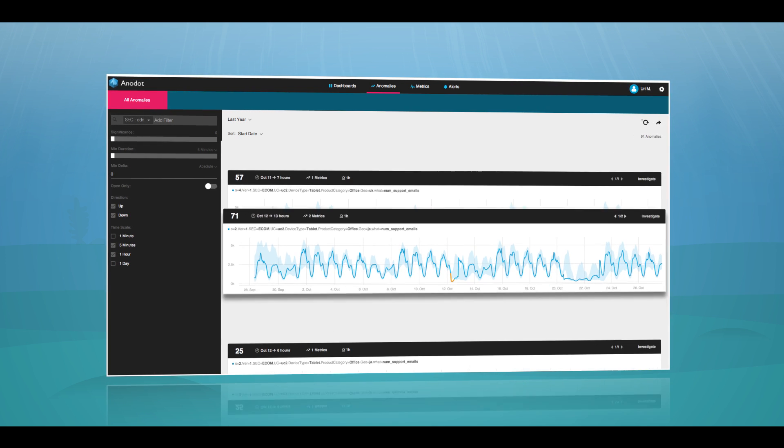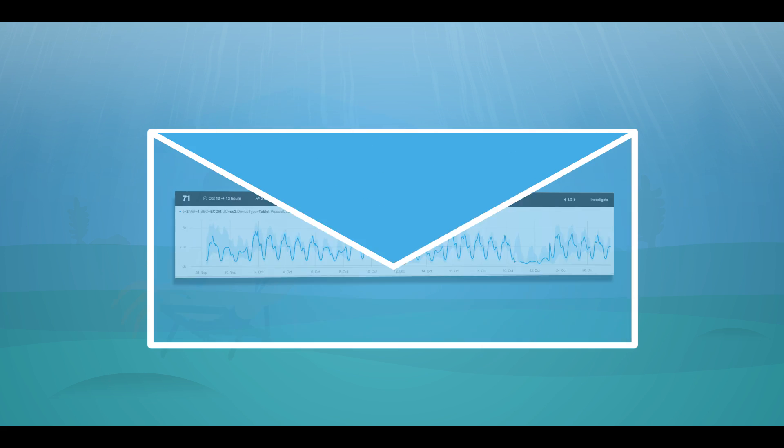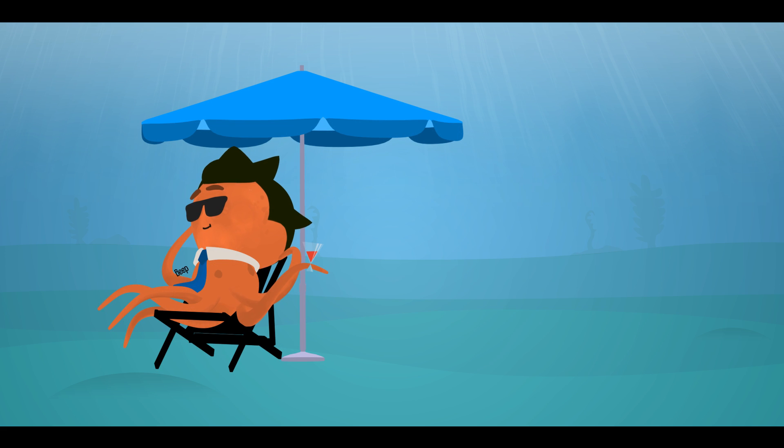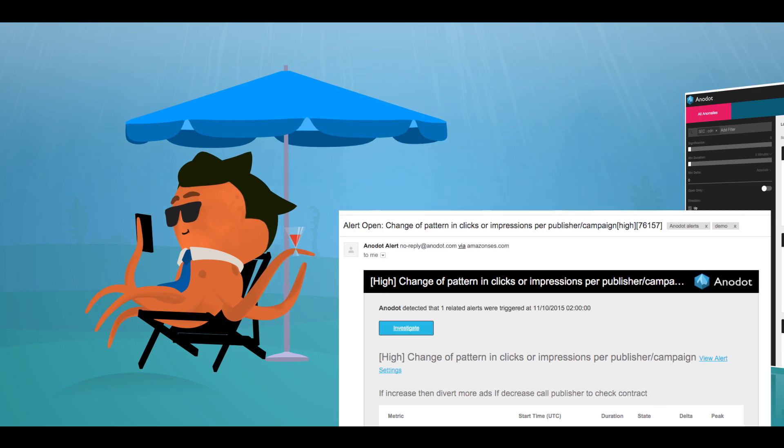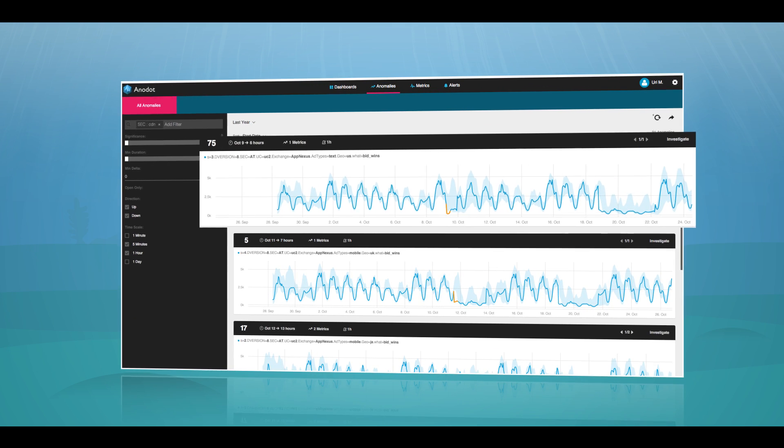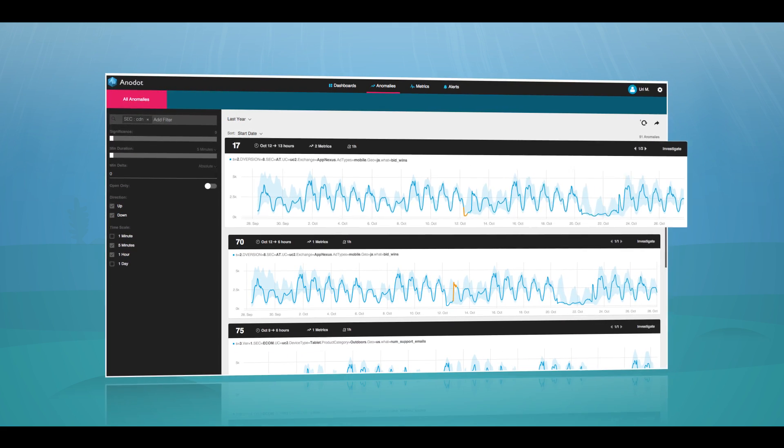Anadot also categorizes, scores, and correlates all of the anomalies it detects. So you receive concise and meaningful alerts on important issues instead of alert storms. Every alert has a priority and context to help you quickly understand what's going on and act on the insight.